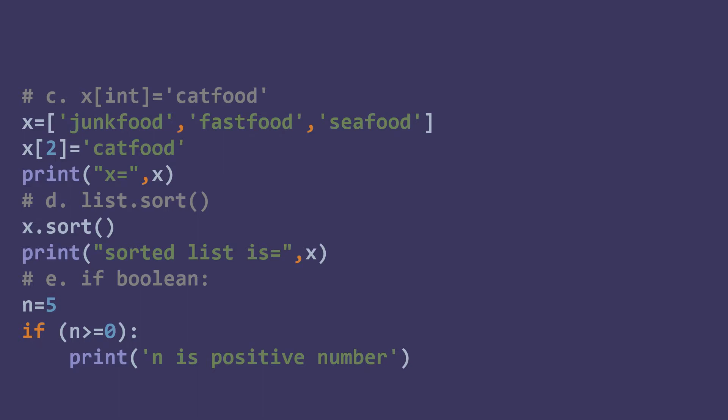The next question is x[dash] = 'cat food'. Cat food is a string value. The square bracket indicates an index — it is asking for one index value — and the index number is always an integer data type. So the data type here is int.